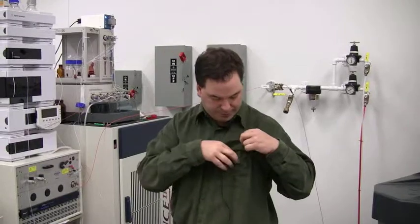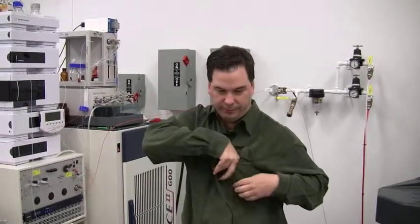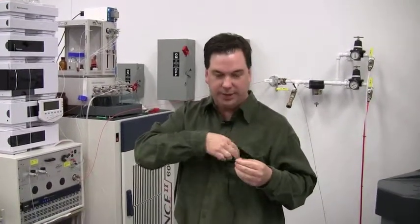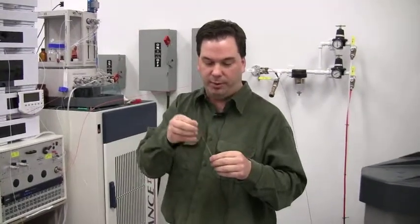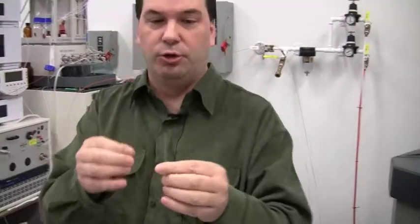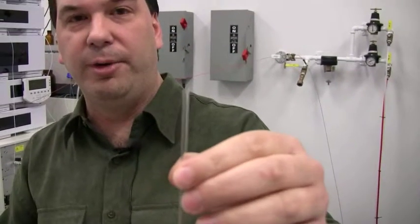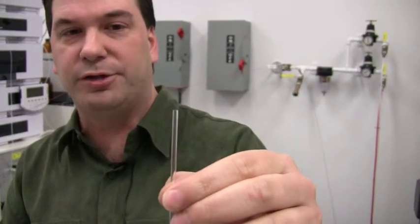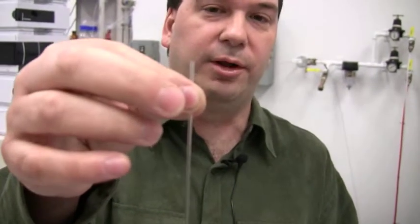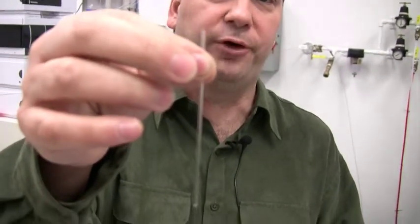The other advantage we have is that we could take the NMR spectra in small diameter NMR tubes. We could use a 3 millimeter NMR tube, which holds about 125 microliters of material, or we could use a 1.7 millimeter NMR tube, which holds about 45 microliters.